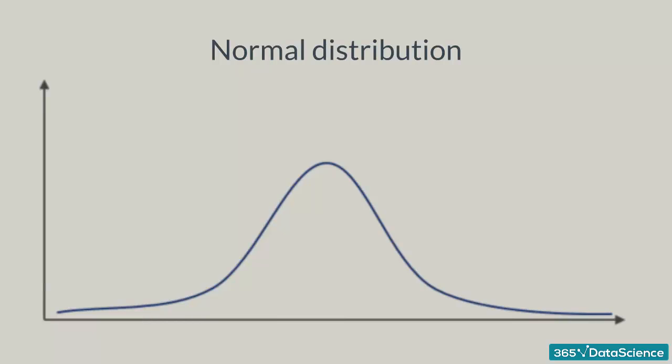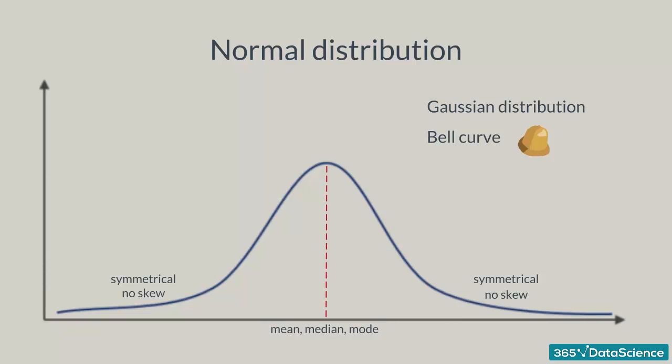Here is a visual representation of a normal distribution. You have surely seen a normal distribution before as it is the most common one. The statistical term for it is Gaussian distribution, but many people call it the bell curve as it is shaped like a bell. It is symmetrical and its mean, median and mode are equal. It is perfectly centered around its mean.